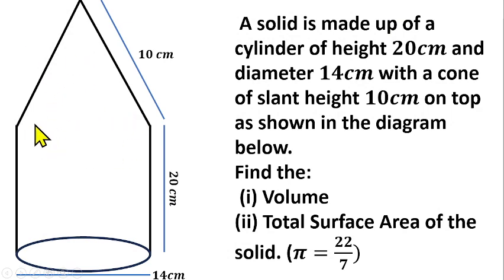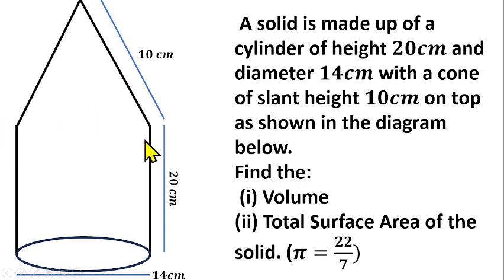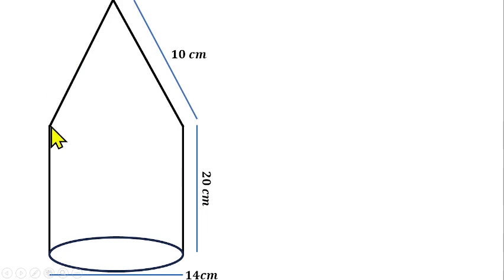That means the circular base of the cone and the circular top of the cylinder will not be seen again, because the bottom of the cone and the top of the cylinder will be covered — they fit together. That's what leads to the diagram you are seeing now. So the bottom of the cone and the top of the cylinder will not be visible.